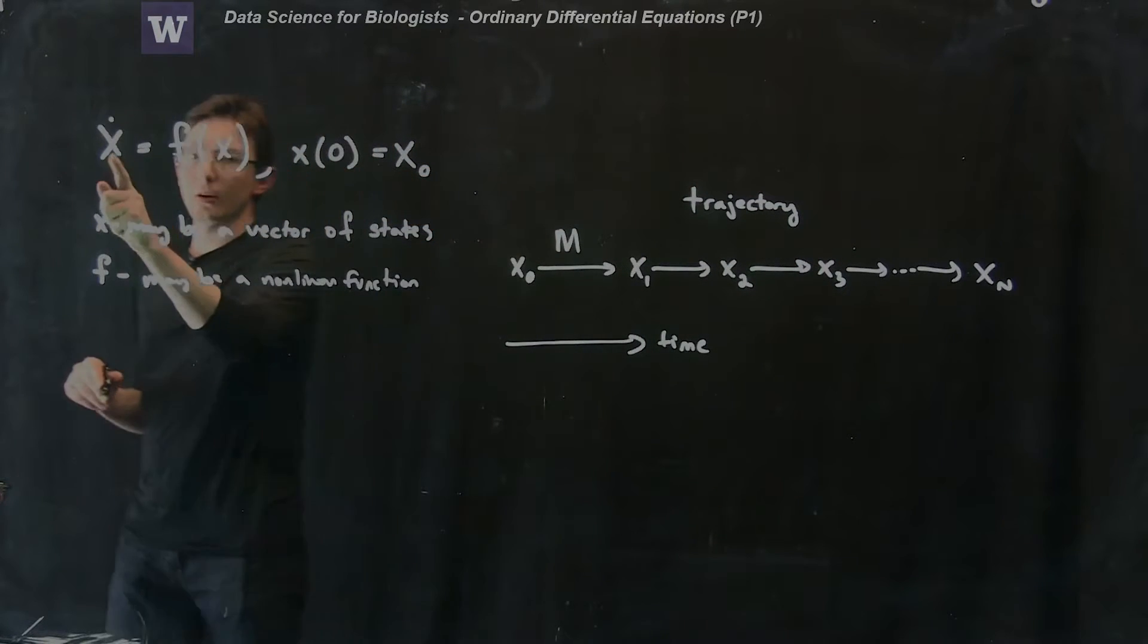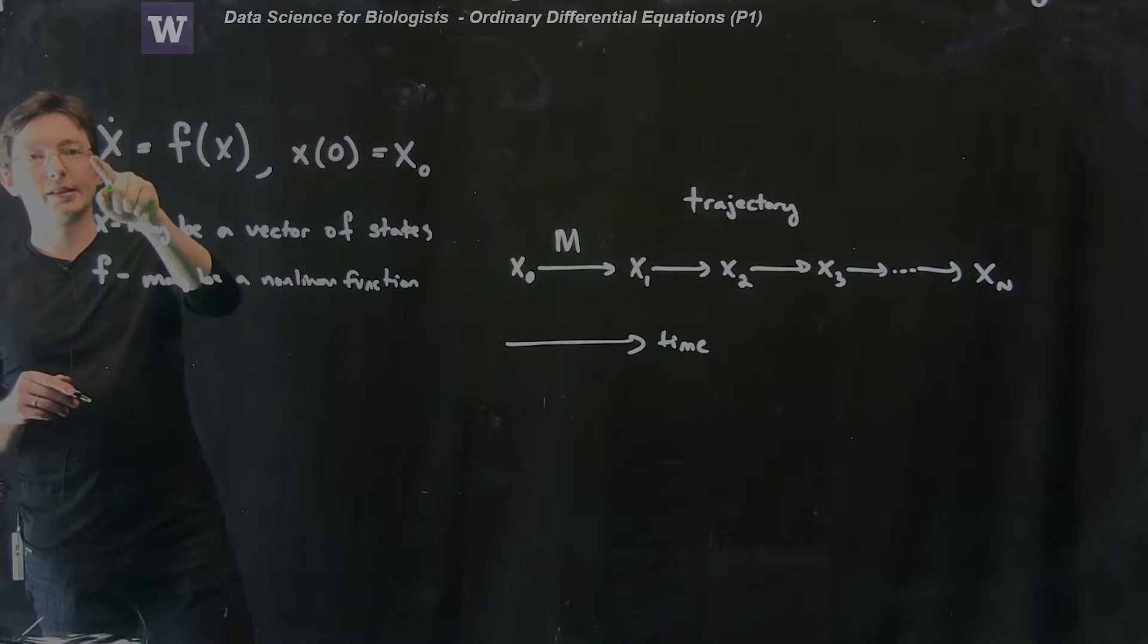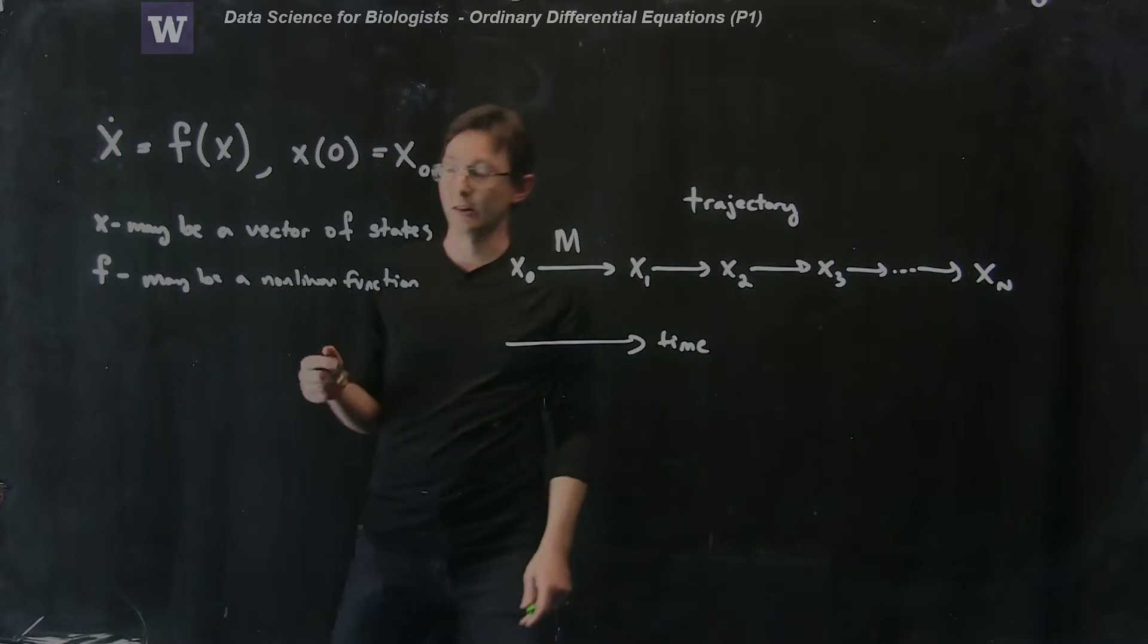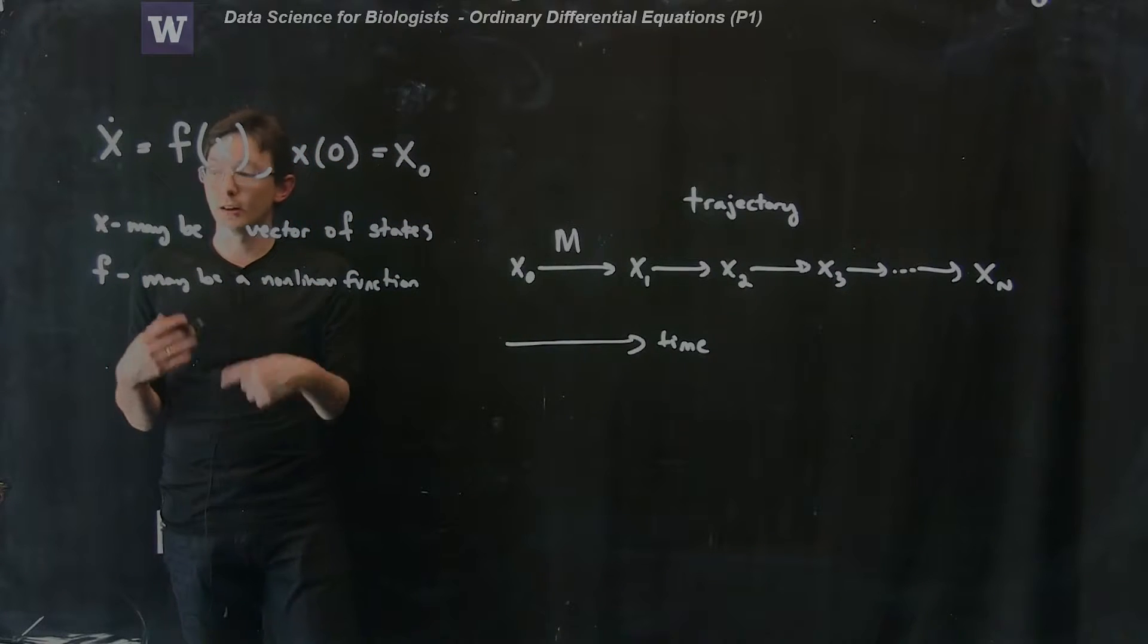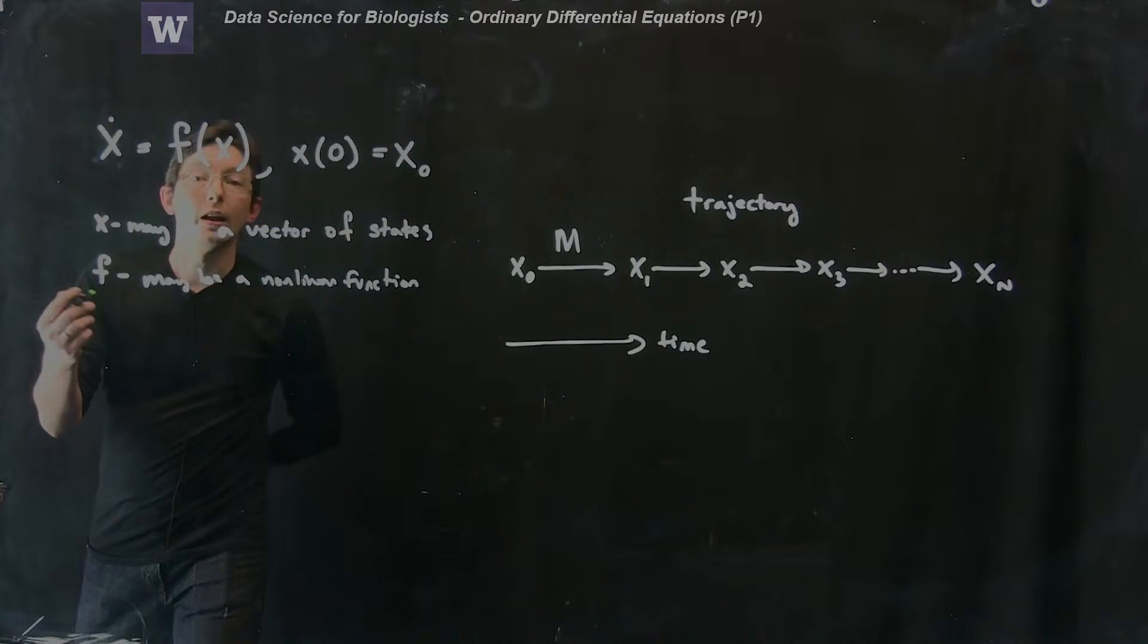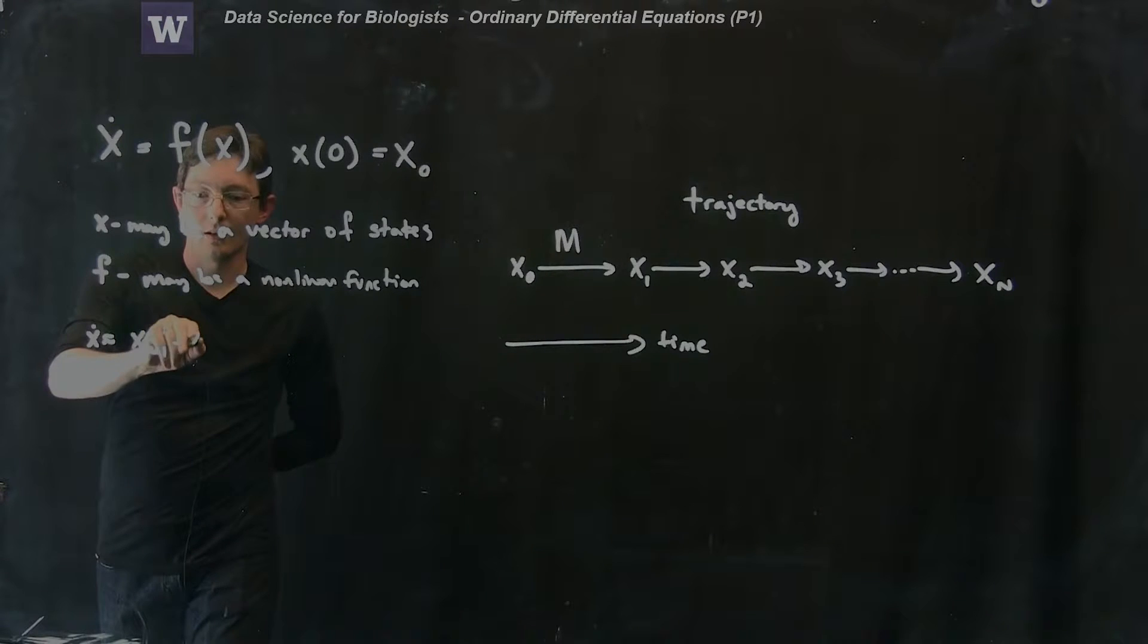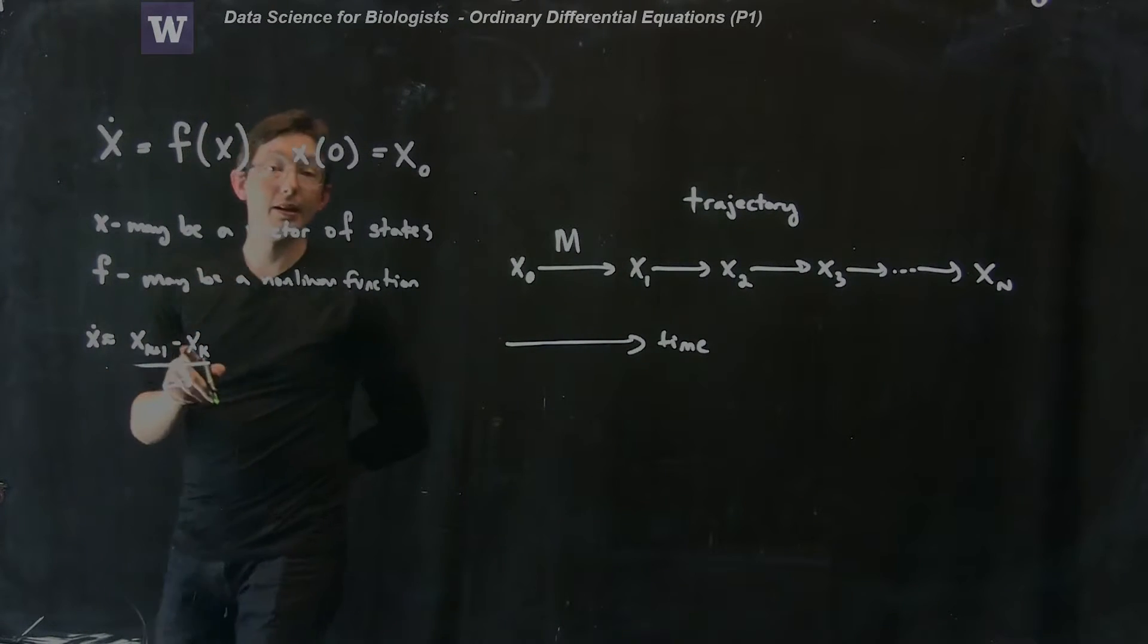So the first thing we're going to do is we're going to look at this x dot and we're going to look at our trusty finite difference approximations to x dot. So what are some ways that we could approximate x dot? Well, if we used forward difference we would say x dot is approximately equal to x_k plus 1 minus x_k divided by delta t.